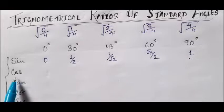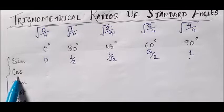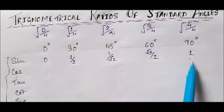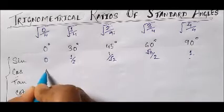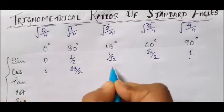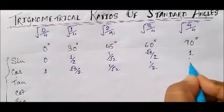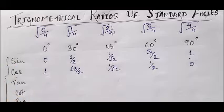Now, how do we find the cosine values? Whatever values we got for sine, we simply interchange their order. So cos values go: 1, then root 3 by 2, then 1 by root 2, then 1 by 2, and then 0. This is how we find the cosine values for the standard angles.